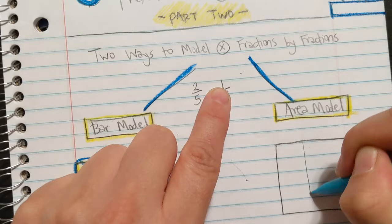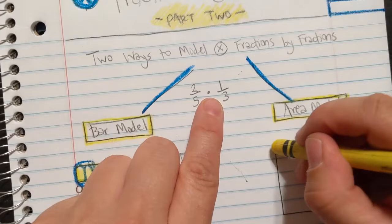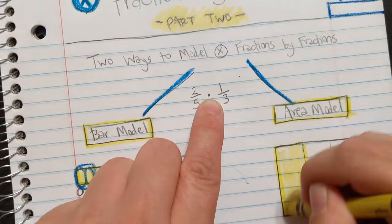I take the second fraction, which is a third, and I have to show it going up and down, like the tall french fries. And I'm going to use yellow for my one third. There it is. Color it in.